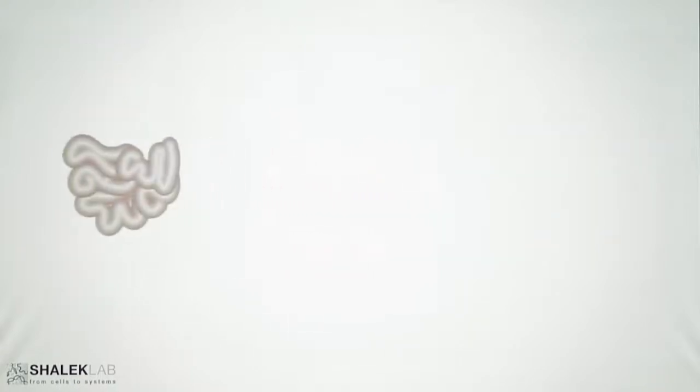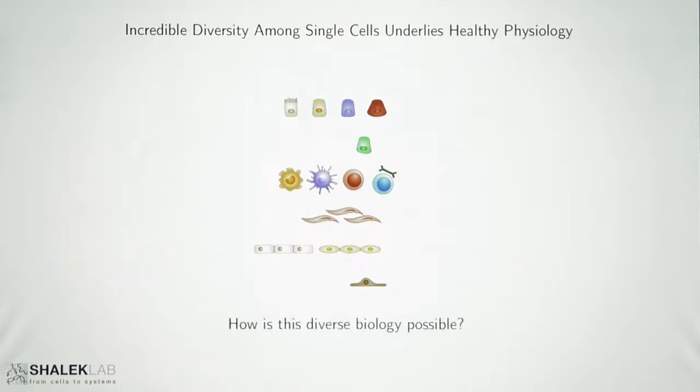Critically, all of the cells in, say, your gut, which is pictured here, are not the same generic gut cell, but they actually are comprised of a huge diversity of cells, each performing unique roles to enable the emergent function of the tissue. And so one of the greatest puzzles in modern biology and genetics is how does all of this diverse behavior arise when every single organism originates from a single cell and has the same DNA.